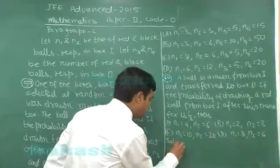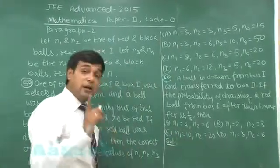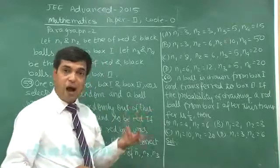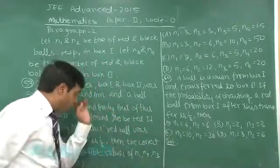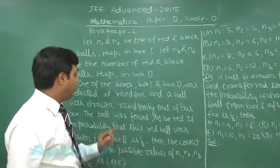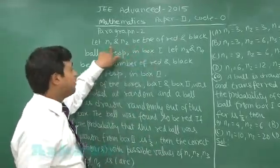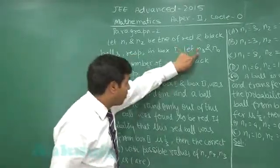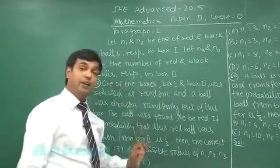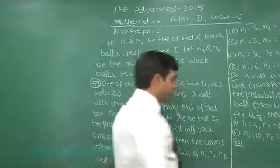So we can start with selection of box - simply half is the probability. Now if we draw from box 1 a red ball, then it will be N1 upon N1 plus N2. Similarly, if we draw a red ball from box 2, then it will be N3 upon N3 plus N4.